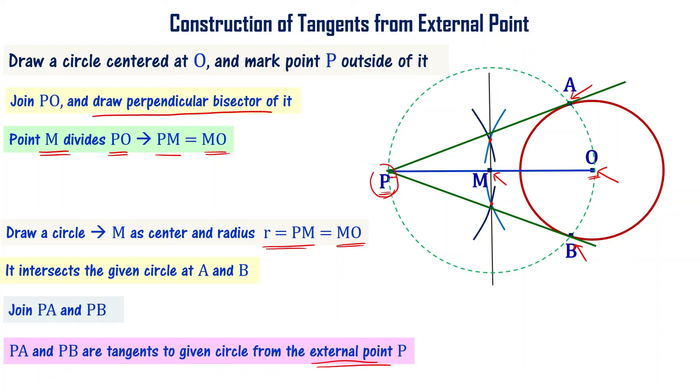The overall process: First, draw a straight line from the center of the circle to external point P and find the midpoint of it. To find the midpoint, use perpendicular bisector. Once you have the midpoint, draw a circle using that midpoint as the center. The circle radius R equal to PM or MO. When you draw that, that circle is going to intersect the original circle at two points. From P to those points, draw lines—those are the tangents to the circle drawn from external point P.